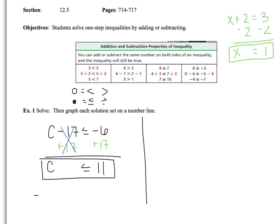When I graph it, I draw my number line and put 11 in the middle with numbers around it. Since I'm dealing with a less than or equal to sign, my dot on the 11 is going to be a filled-in dot. I look at my inequality and the arrow is going to go to the left.